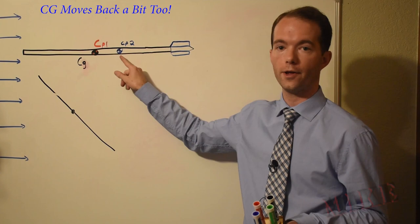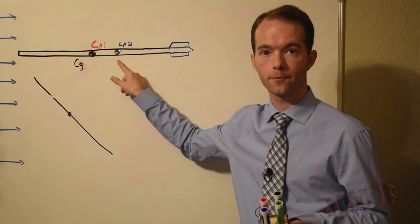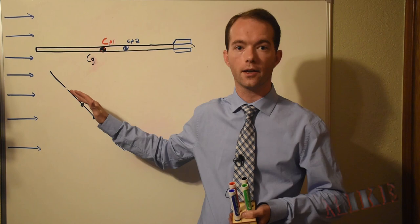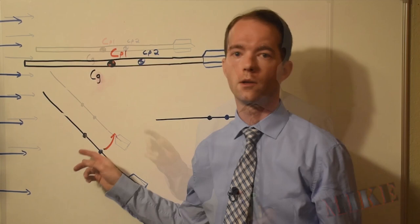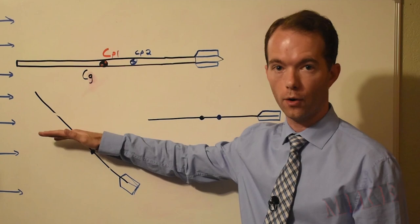Now, the fletching here moved the CP over to here, to CP2. Remember from my other video that the CP is the average of all the projected area? Well, these big fins back here move that average area this way. And now let's consider the second case with the arrow. We launch it at an angle like we did with the stick, and what's going to happen now? The arrow moves around its CG, but the air acts on the CP. So there's a torque created by the CP around the CG that will rotate the arrow in line with the airstream.